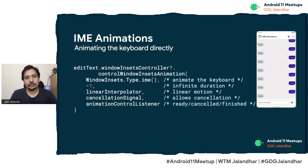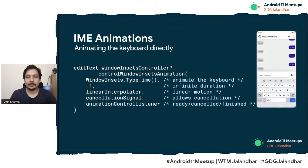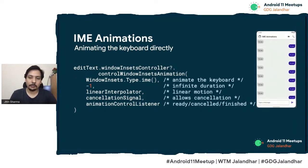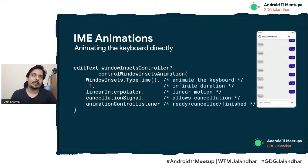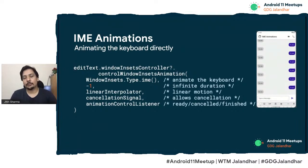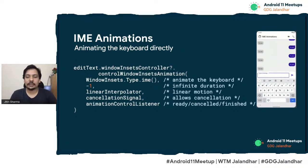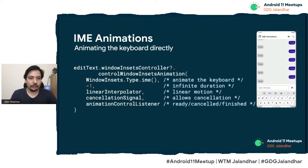For the other approach where you want to take control, you can use WindowInsetsController.controlWindowInsetsAnimation. This allows you to control the animation of the insets. If we take the type IME here, we can take control and open it. We can even pass things like a linear interpolator, which means we want the keyboard to open in a linear motion. You can also use custom path interpolators to define the motion. You get callbacks like ready, cancelled, and finished to know when the animation is complete or cancelled.